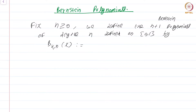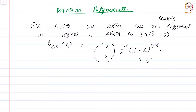b_{k,n}(x) is defined as n choose k times x to the power k times (1 minus x) to the power n minus k, and this is for k equal to 0, 1, 2, dot dot dot n. So given a fixed n in the natural numbers, there are n plus 1 polynomials, each of degree k, where k runs from 0 to n.